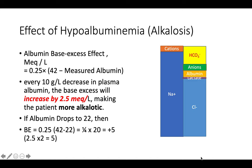For every 10-gram decrease in plasma albumin, the base excess increases by 2.5 mEq/L, making the patient more alkalotic. For example, if albumin drops to 22 g/L, the difference from 42 is 20; one-quarter of 20 is 5. So base excess increases by plus 5 — the patient becomes more alkalotic.